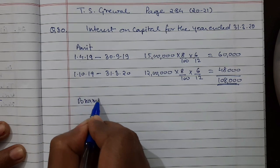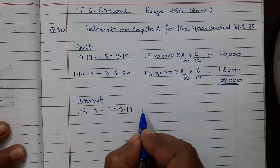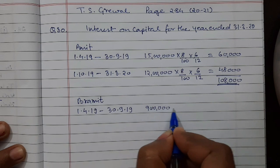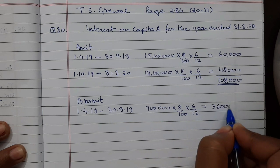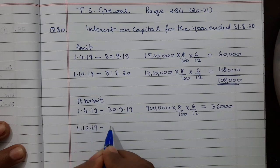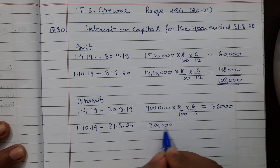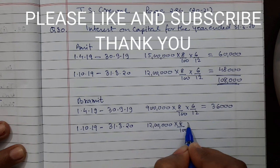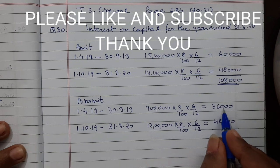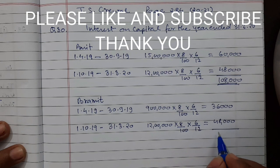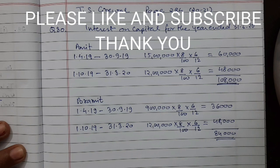For Brahmit: from 1st April 2019 to 30th September 2019, his capital was rupees 9 lakh. At 8% per annum for six months, interest is rupees 36,000. From 1st October 2019 to 31st March 2020, he increased his capital to rupees 12 lakh by bringing in rupees 3 lakh more. At 8% per annum for the remaining six months, interest is rupees 48,000. Total interest on capital for Brahmit: 36,000 + 48,000 = rupees 84,000.